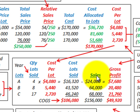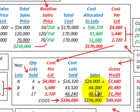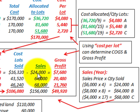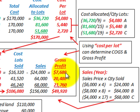To determine gross profit, we calculate sales for the year for each group. For lot A, the sales price of $6,000 times 4 lots sold equals $24,000. We do the same for B and C. Then for each group, sales minus cost of lots sold gives gross profit — for A, $24,000 minus $16,320 equals $7,680. Total gross profit for the year is $49,920.